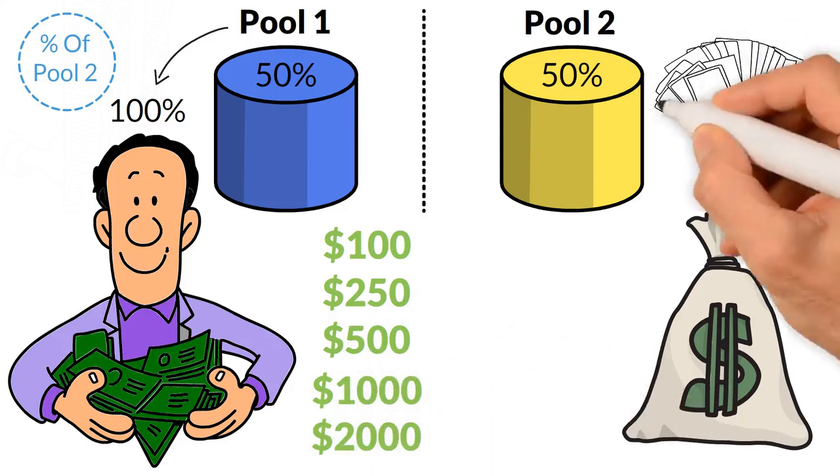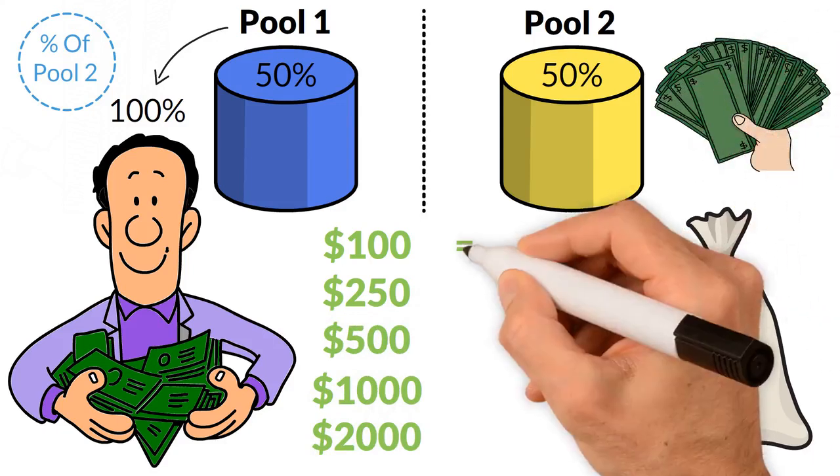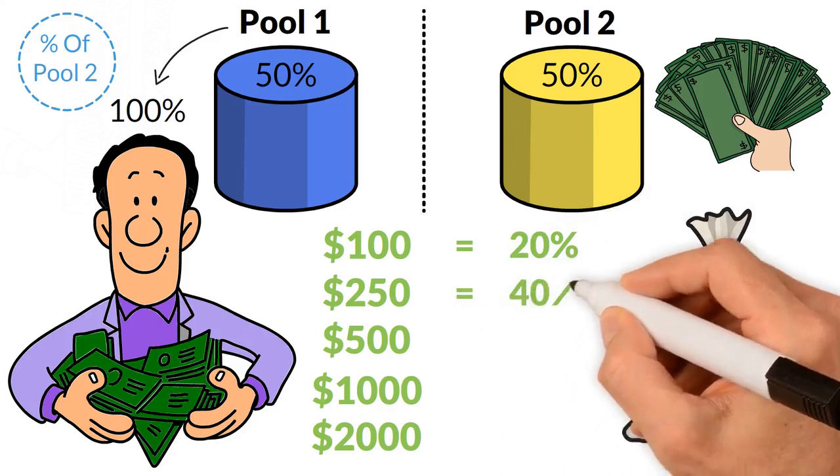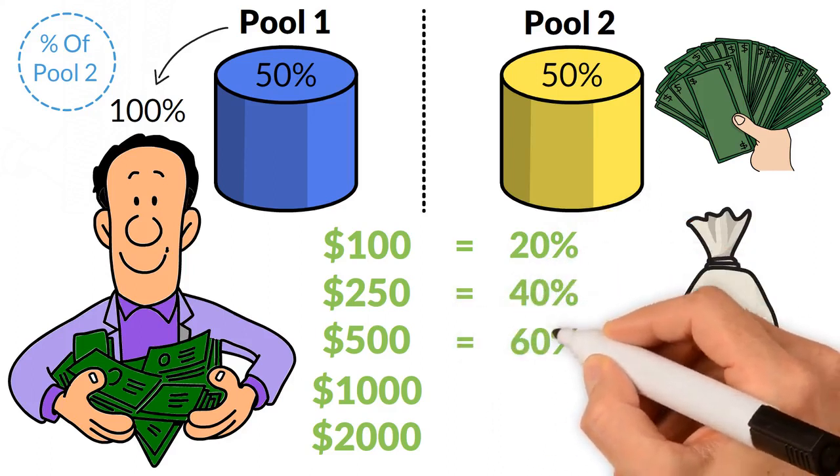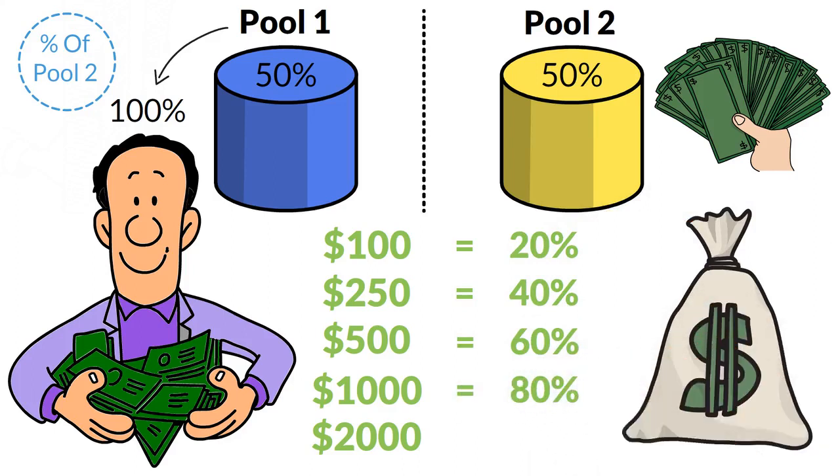The Pool 2 amount you receive is based on your own contribution level. $100 equals 20%, $250 equals 40%, $500 equals 60%, $1,000 equals 80%, and $2,000 equals 100%.